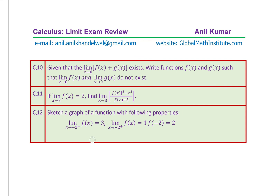Question 12: sketch a graph of a function with the following properties — limit of f of x equals 3 as x approaches minus 2 from the left side; limit of f of x equals 1 as x approaches minus 2 from the right side; and f of minus 2 equals 2.